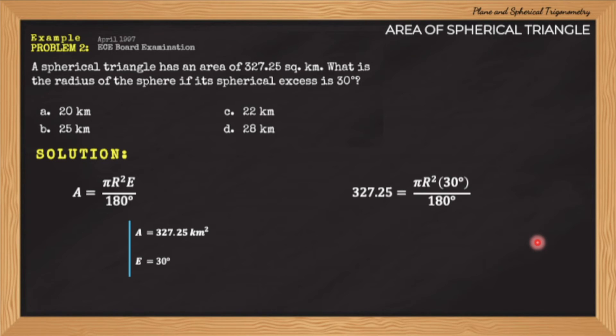If we substitute these values A and E into our formula, the only unknown will be the R, which is the radius of the sphere and is what is asked in the problem. So using simple algebra, we will have a final answer of 25.00 kilometers. From the choices in the problem, the correct answer is letter B.